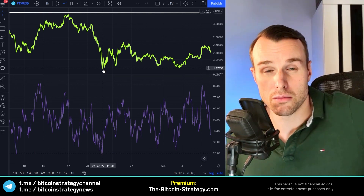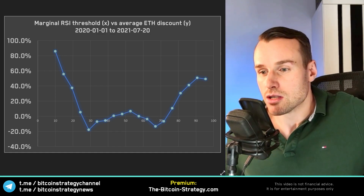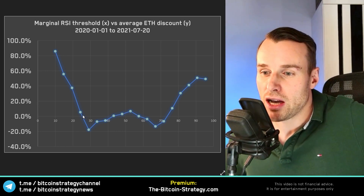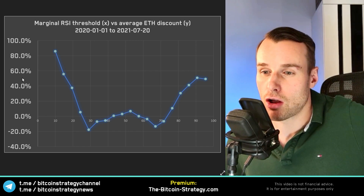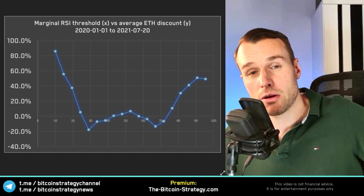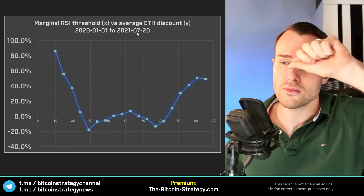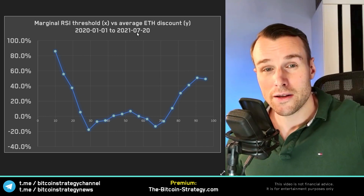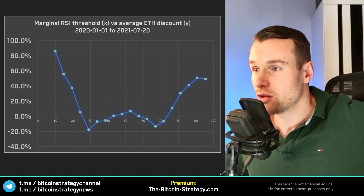I've done this backtest with Ethereum. If you buy when the hourly RSI is at 50 — the middle — you just get roughly the average price. But if you buy whenever the hourly RSI is at 20 or below, on average you pay about 40% lower than the average price. This was tested from January 1st, 2022 to July of last year. You take all the prices, average them, and compare that to the subset of prices where the RSI was 20 or below.